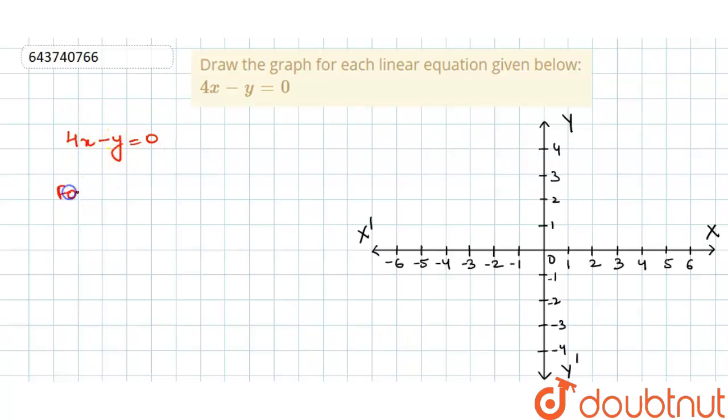So first we will put x is equal to 0. This term will become 0 and this minus y is equal to 0 which is nothing but y equal to 0. So we got our first point that is the origin, because 0, 0 is the origin of the coordinate system.